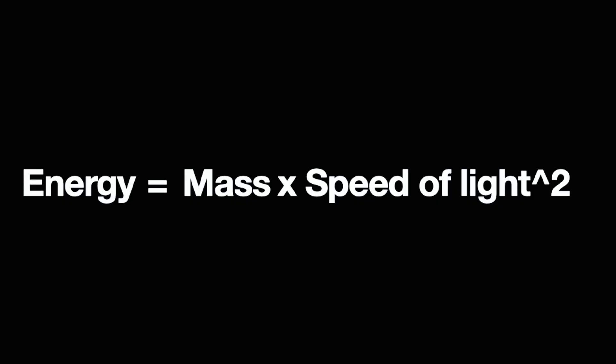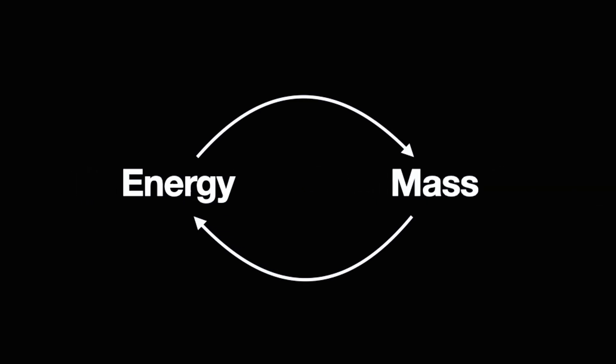According to Einstein's theory of special relativity, energy equals mass times the square of the speed of light. This shows that energy and objects are interchangeable. If you destroy objects, you get energy — just like we burn petrol to run our cars. But what about the opposite? How does energy create an object?